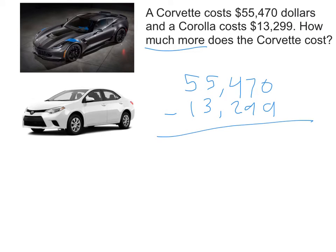From there, I need to start subtracting. Now, my problem immediately that I'm running into is that I can't take 9 away from 0, because if I have nothing, I can't take anything away from that. So I have to do some exchanging of my place values. I would go to the 7, and I would get a group of 10 from there. So that would be brought down to 6, and then this would be expanded into 10. So now I can subtract. 10 minus 9 would give me 1.